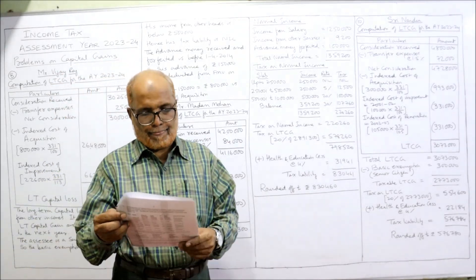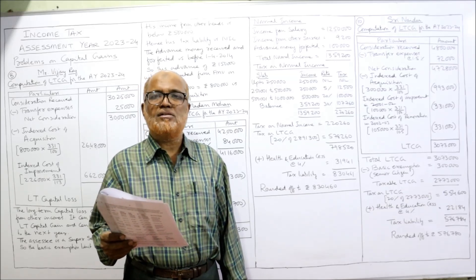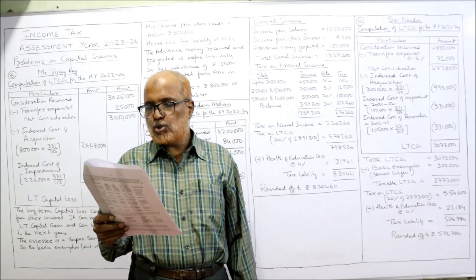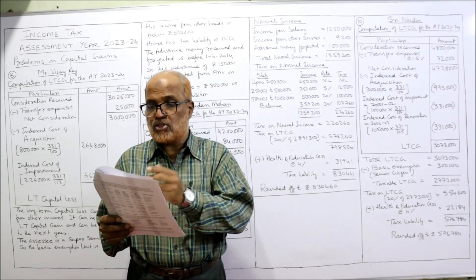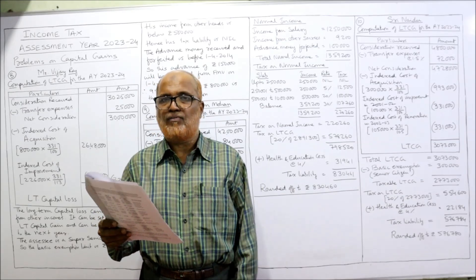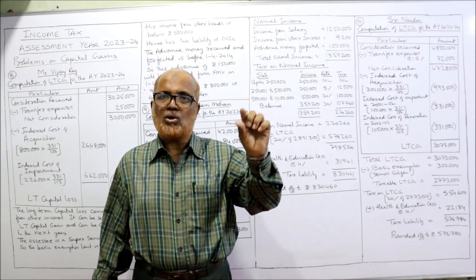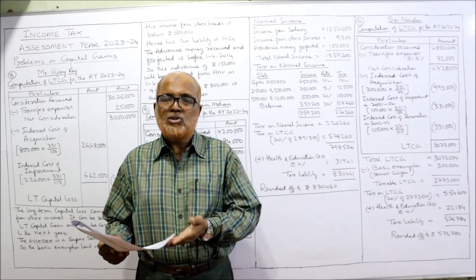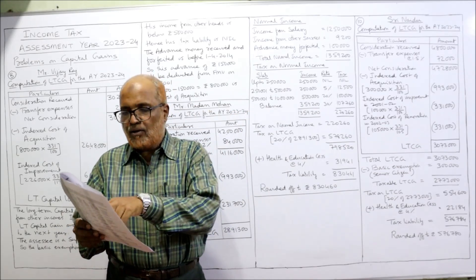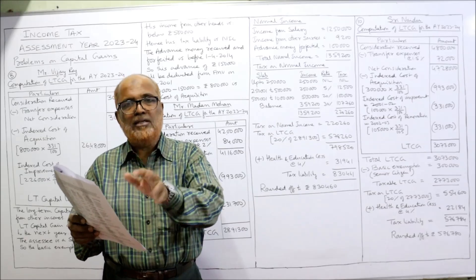Problem number 10. On 14th July 1972, Sri Naidu, aged 64 years — that means senior citizen, above 60 years — purchased a house property for 9,100. The basic exemption limit for a senior citizen is 3 lakh. He constructed a first floor in 1998-99 for 75,000. Whenever an asset is purchased before 1/4/2001, the assessee can choose either the actual cost or FMV, whichever is higher. So any cost incurred before 1/4/2001 should be ignored — the 9,100 purchase price and the 75,000 first floor cost are both ignored.